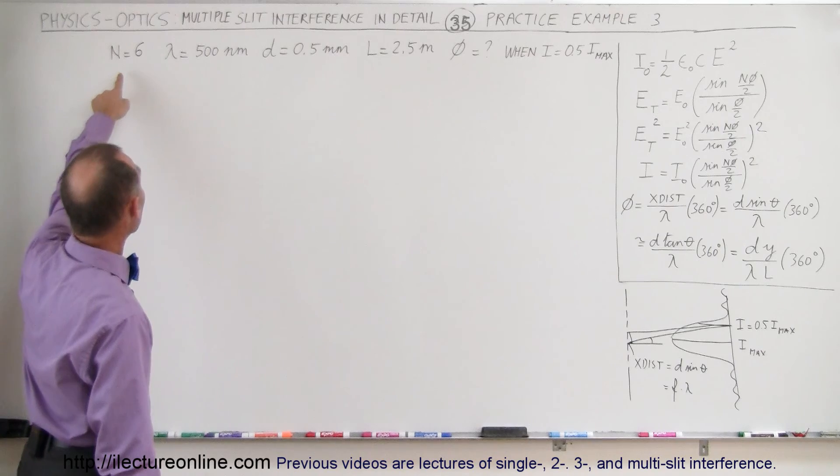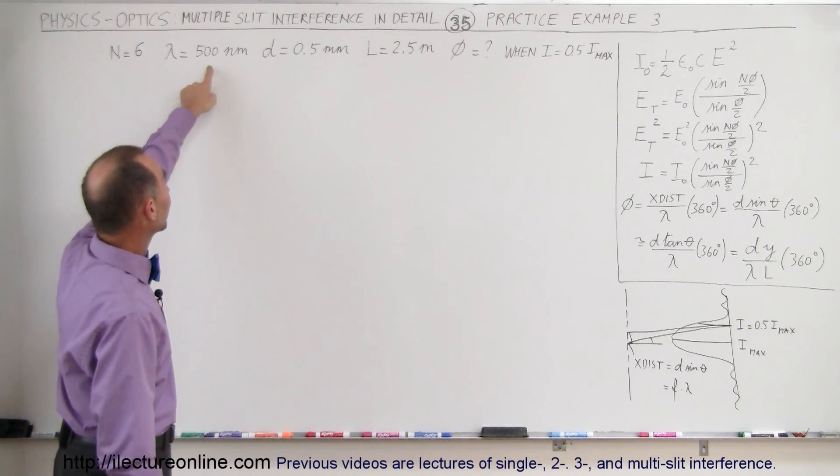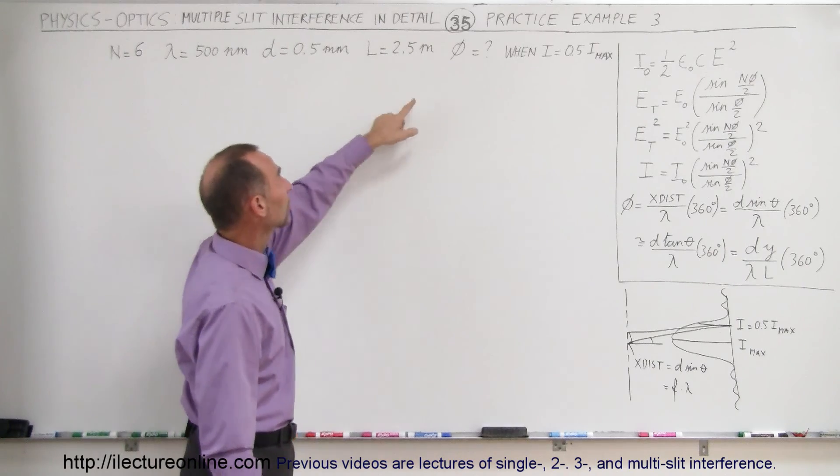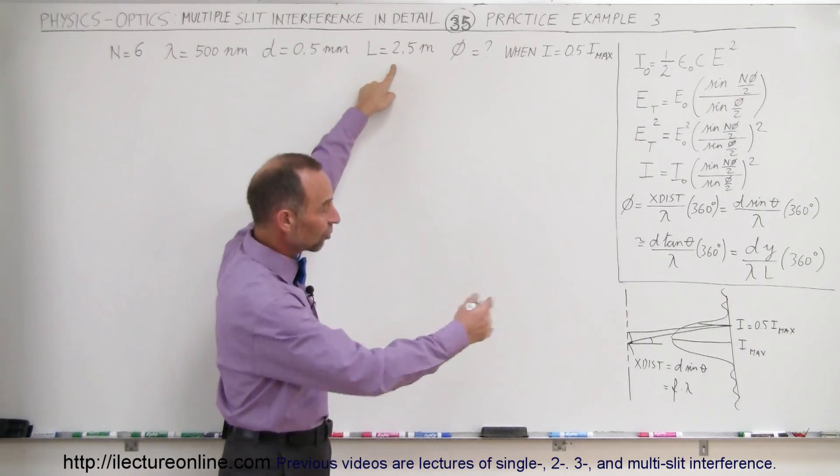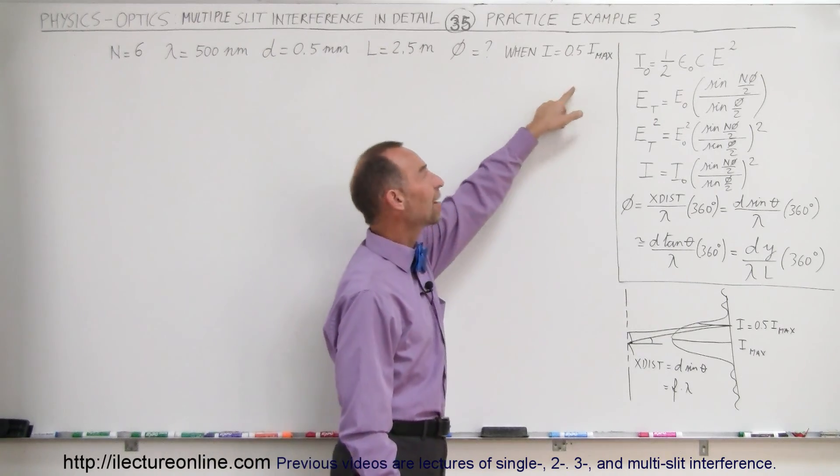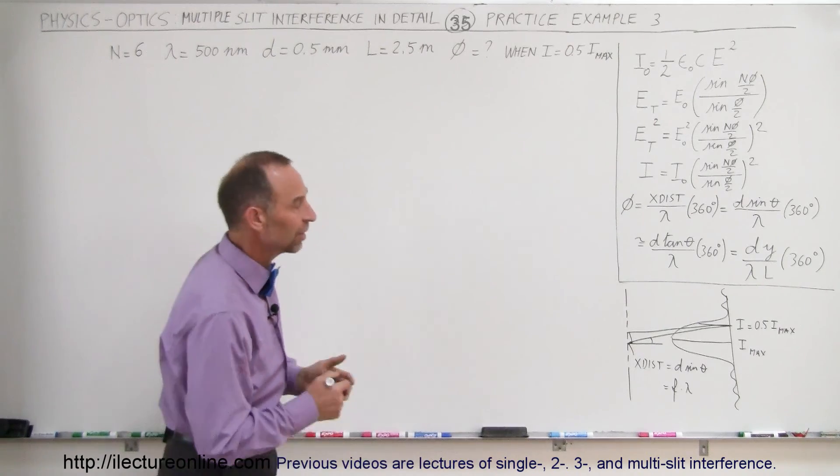The information we have is we have six slits, the wavelength is 500 nanometers, the distance between the slits is 0.5 millimeters, the distance of the screen is 2.5 meters, and we're trying to find the phase difference when I is half the maximum intensity.